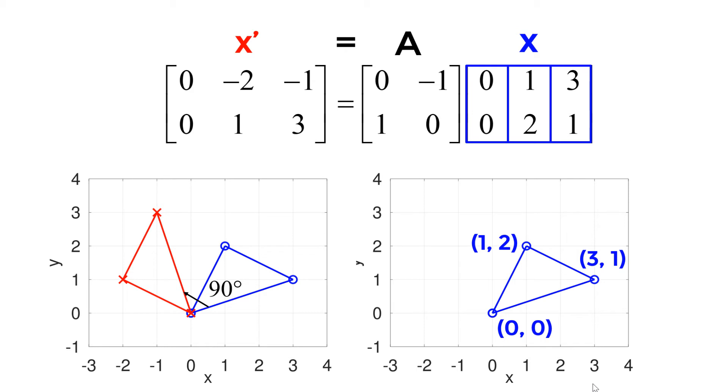Once you multiply A by x, you can calculate the new coordinates for the rotated triangle as (0, 0), (-2, 1), and (-1, 3), which are shown as a resulting x prime. This is graphically shown in the red color.